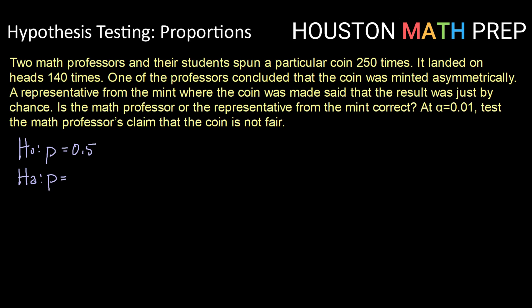Here the math professor is claiming that it is not fair. So we'll write an alternative hypothesis of p is not equal to 0.5.